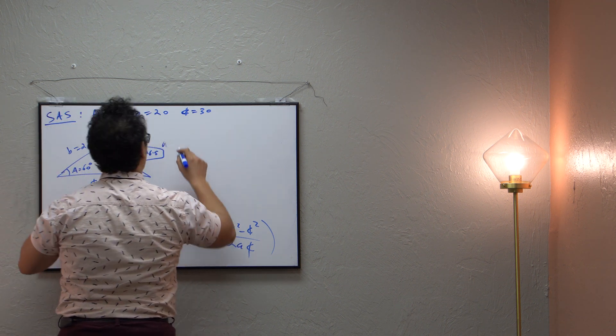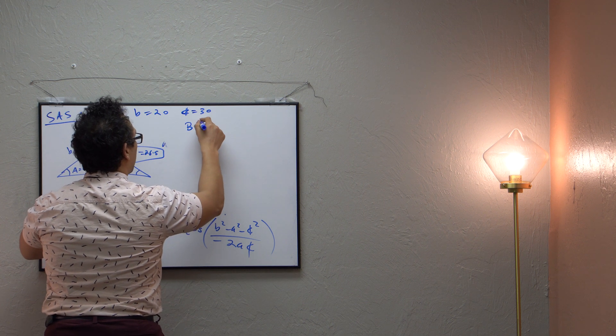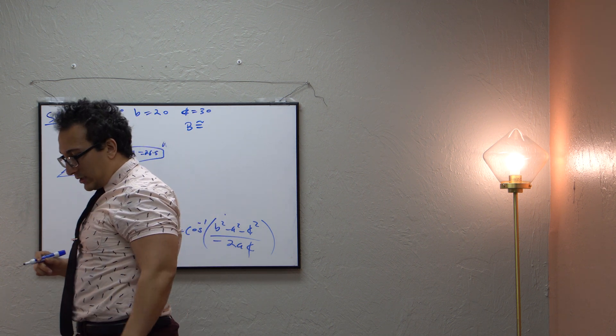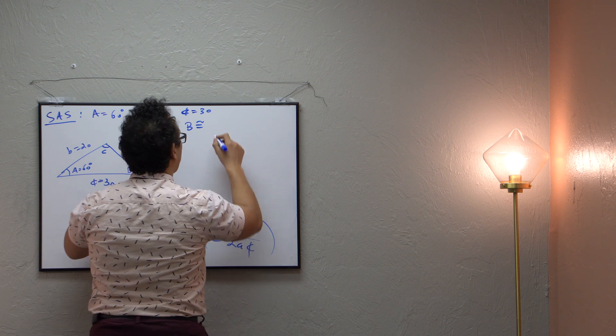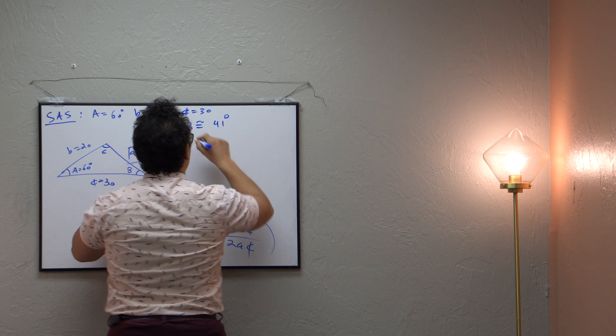So then when we use our calculator and plug it in, we get b is approximately 41 degrees.